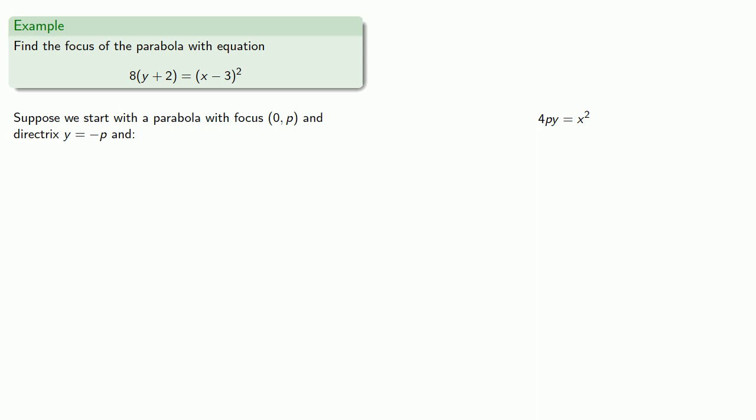So one of these things is not like the other. The first thing we might observe here is that in our parabola we have x squared, but we really want x minus 3 squared. And we can get an x minus 3 if we shift horizontally to the right by 3 units.